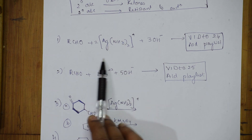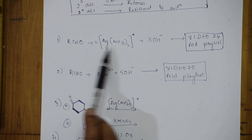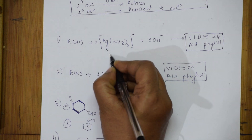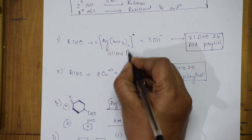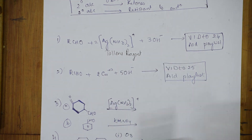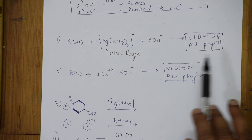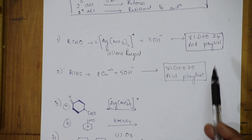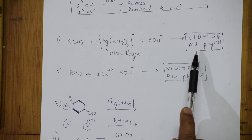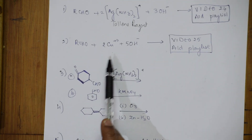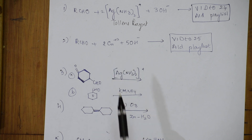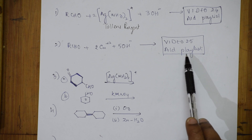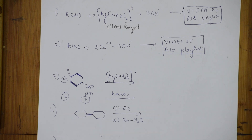In your aldehyde chapter, this equation shows treating aldehyde with Tollens reagent to form the silver mirror test. This complex is called Tollens reagent. I've done a detailed video on the Tollens test — watch video number 24 in the aldehyde playlist, where the full mechanism is explained. The next reaction is with Fehling solution (Fehling A and Fehling B), covered in video number 25 in the playlist.